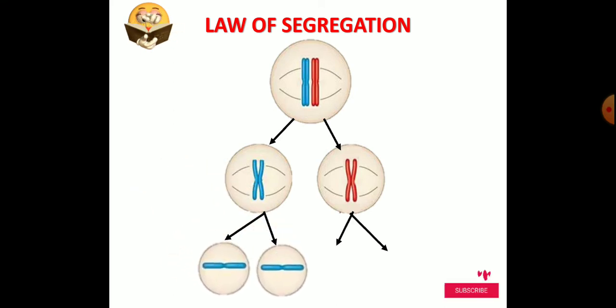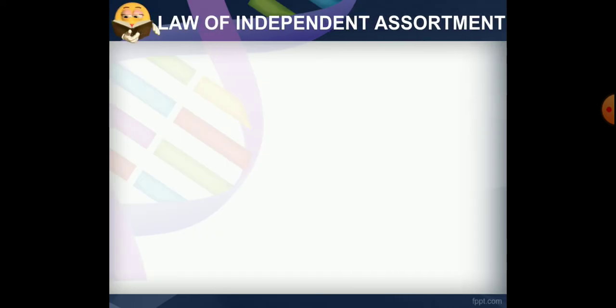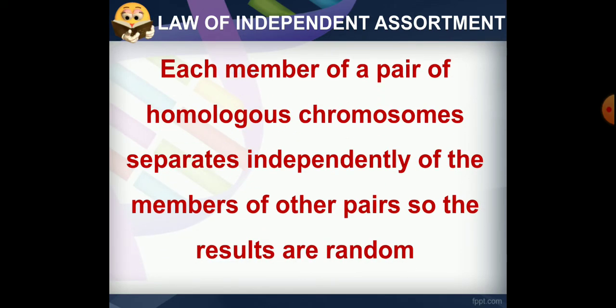These are the gametes formed. The law of independent assortment states that each member of a pair of homologous chromosomes separates independently of the members of other pairs, so the results are random. For example, chromosome 1 separates independently of chromosome 4, and chromosome 2 separates independently of chromosome 20. They are separated independently during gamete formation.